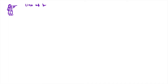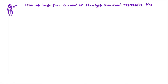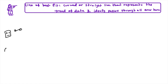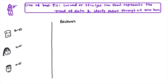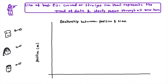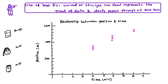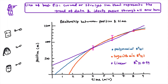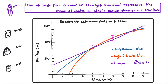Mr. S asks students to draw the line of best fit — a curved or straight line representing the trend of data that ideally passes through all the error bars. Robo's group used a computer to draw the line of best fit. They found that polynomial, logarithmic, and linear models all described the data well, each having a coefficient of determination (R²) value close to one, meaning the average values are very close to the trend line.